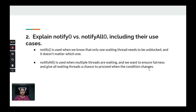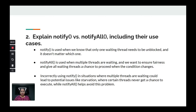Giving all waiting threads a chance to proceed when the condition changes is important. The biggest difference between notify and notifyAll is that notifyAll sends notification to all waiting threads, while notify should be used only when you know there is a single waiting thread. If you incorrectly use notify when multiple threads might be waiting, it could lead to starvation — where certain threads never get a chance to execute.